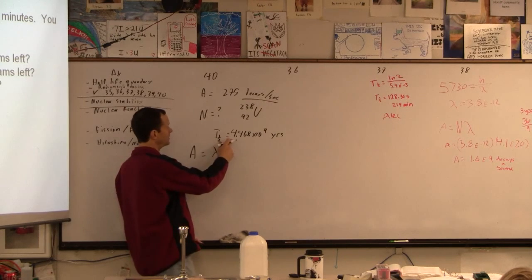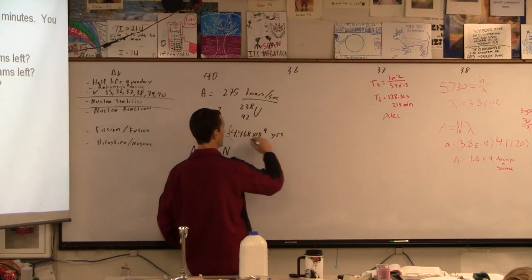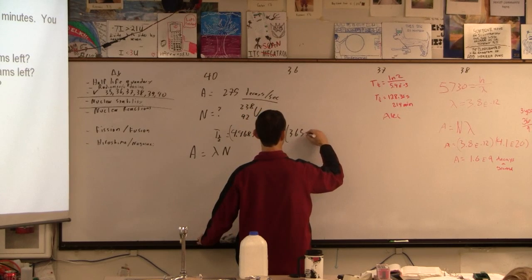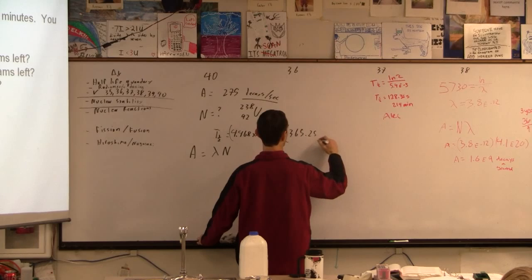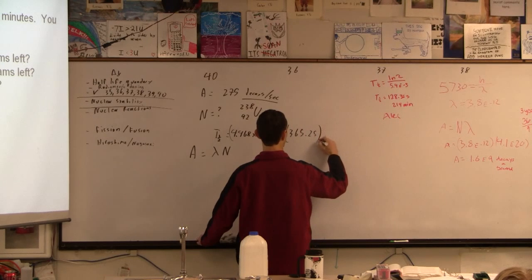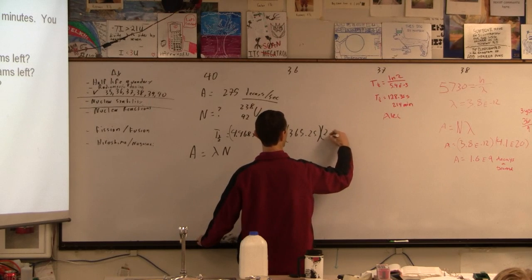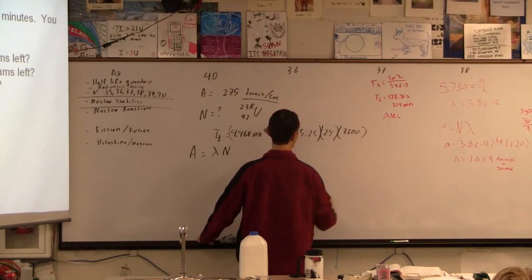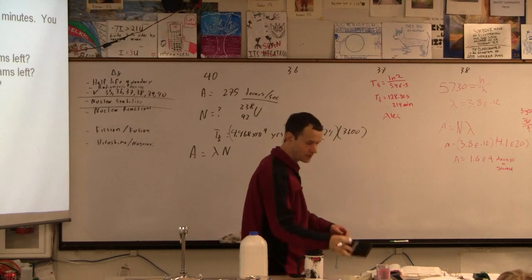So we've got to turn that into seconds. So let's go 365.25 roughly. That's years, how many seconds in a year. Days times 24 times 3600. Does that do it? That's a lot of seconds.